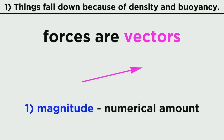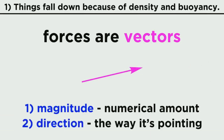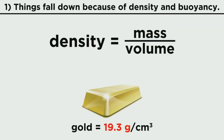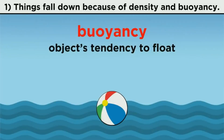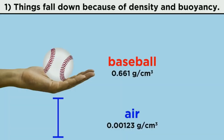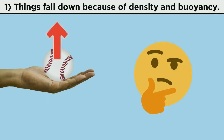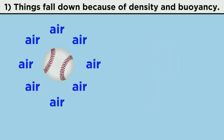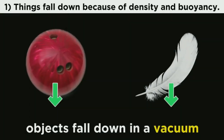Forces are vectors — they have a magnitude, a numerical amount, and a direction, which means they have to point somewhere. Density is simply mass per unit volume, or how much matter sits in a particular space. It doesn't point anywhere. And buoyancy is simply a measurement of an object's tendency to float. You say objects fall down because they are more dense than the air below them — why down? Why not up or sideways? When you let go of a ball, there is air all around it. How does it know to fall down? Also, objects fall down when in a vacuum, which means there is no air below them.